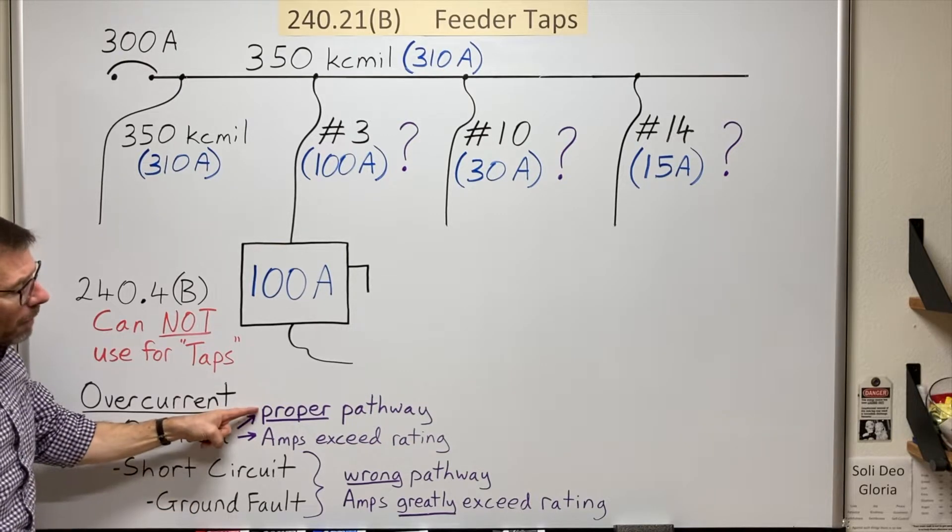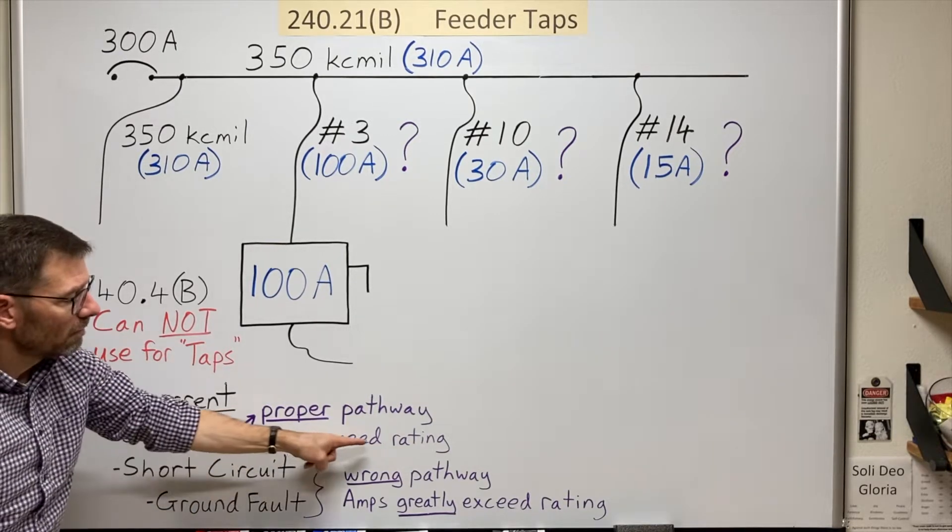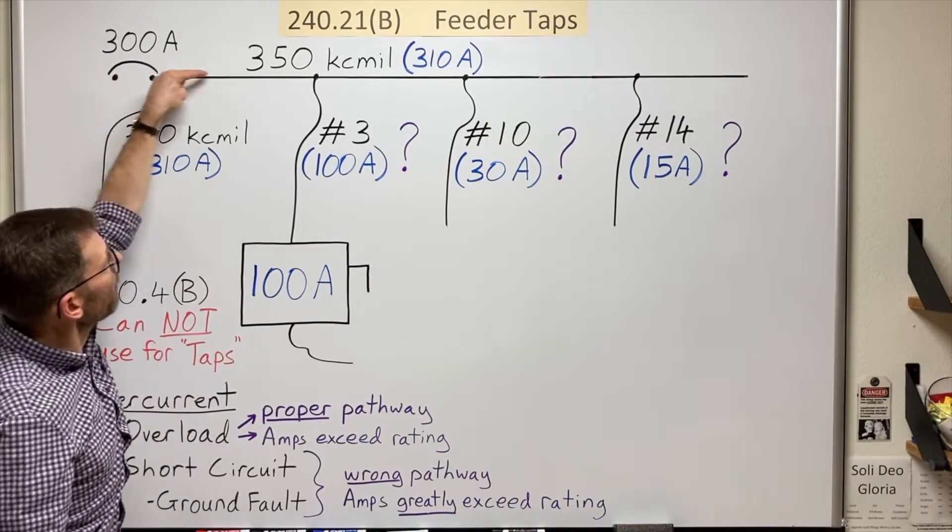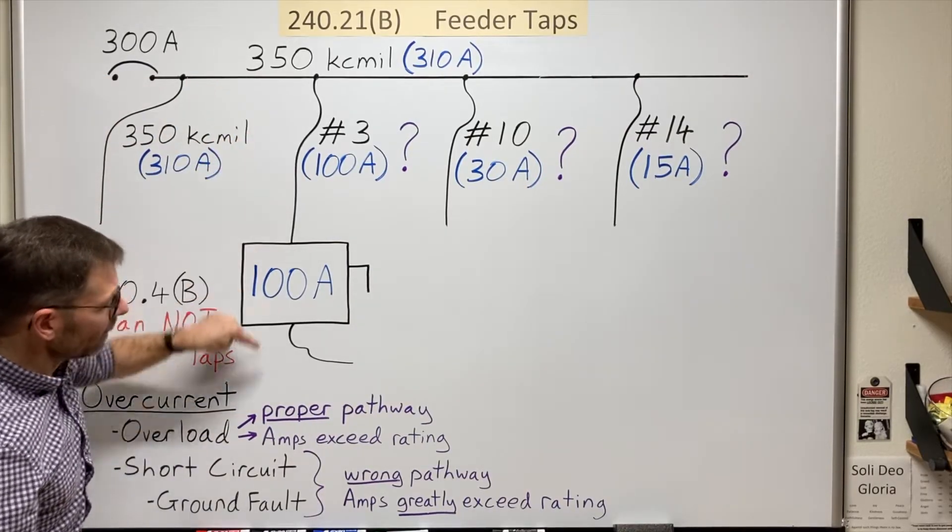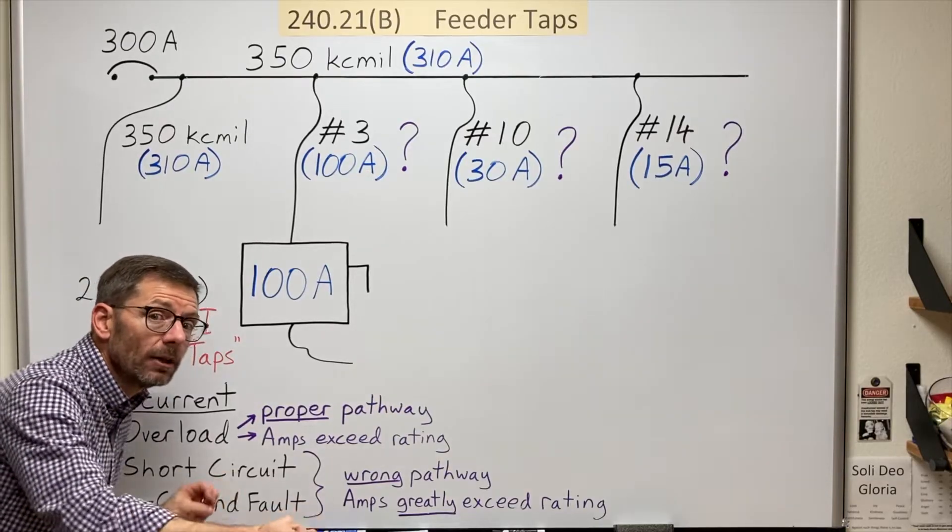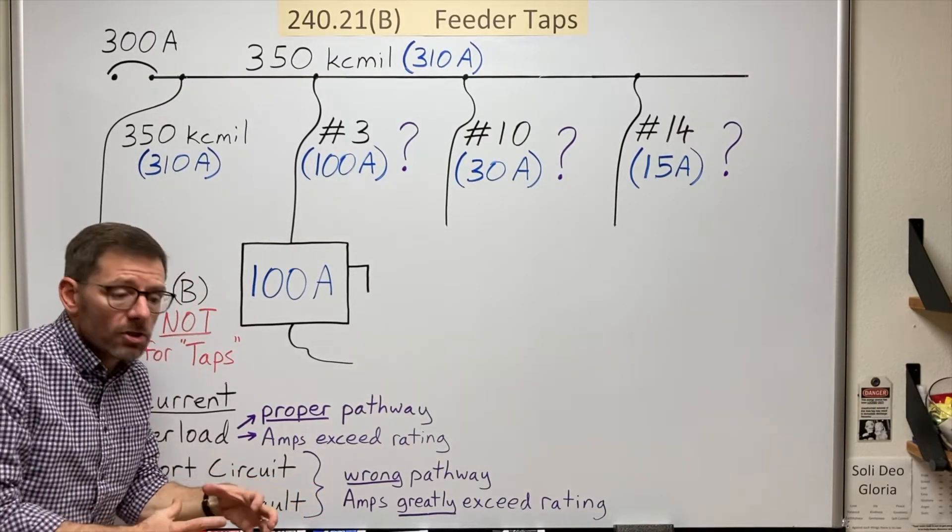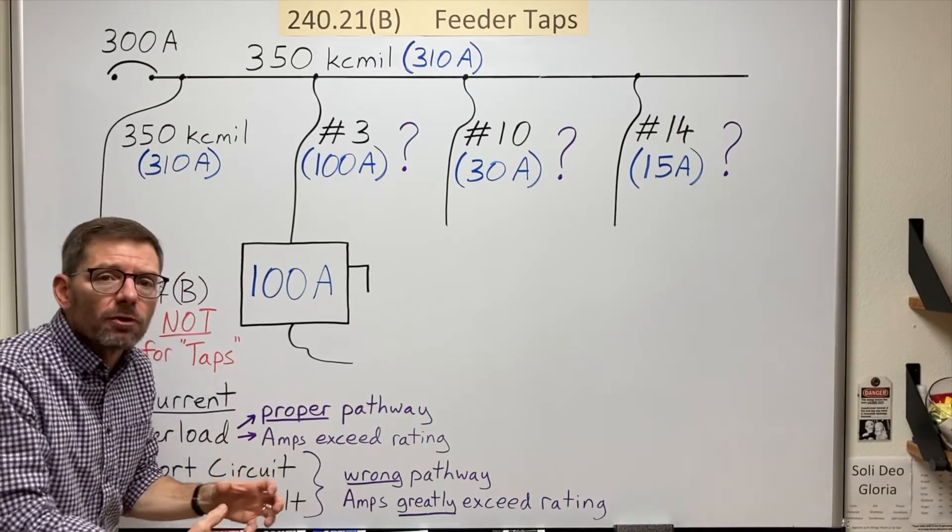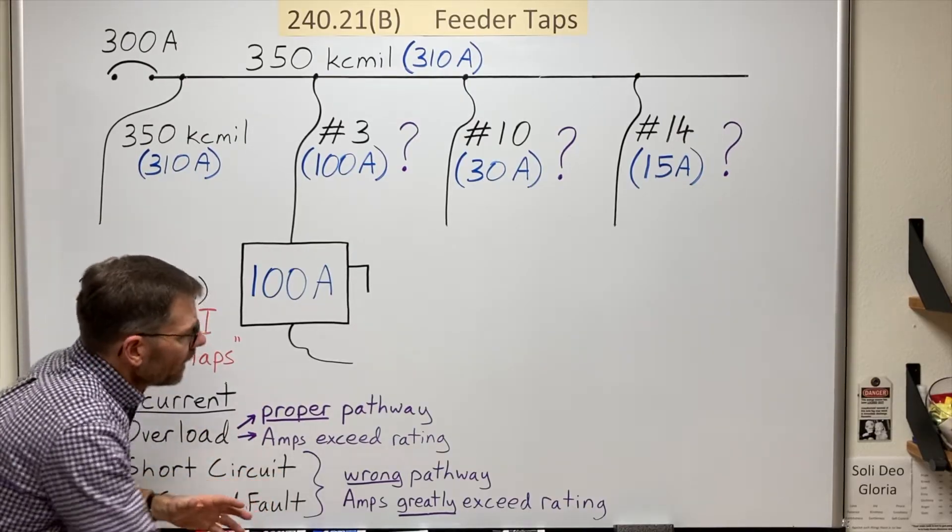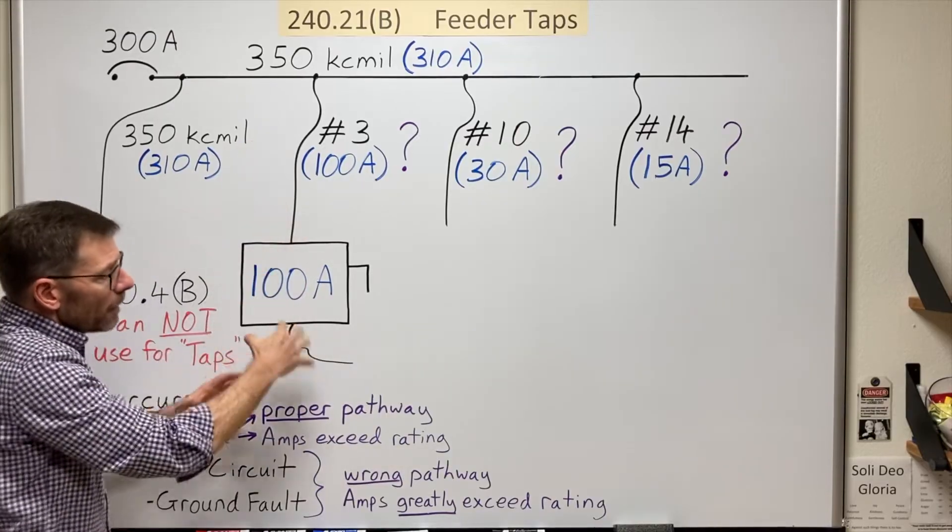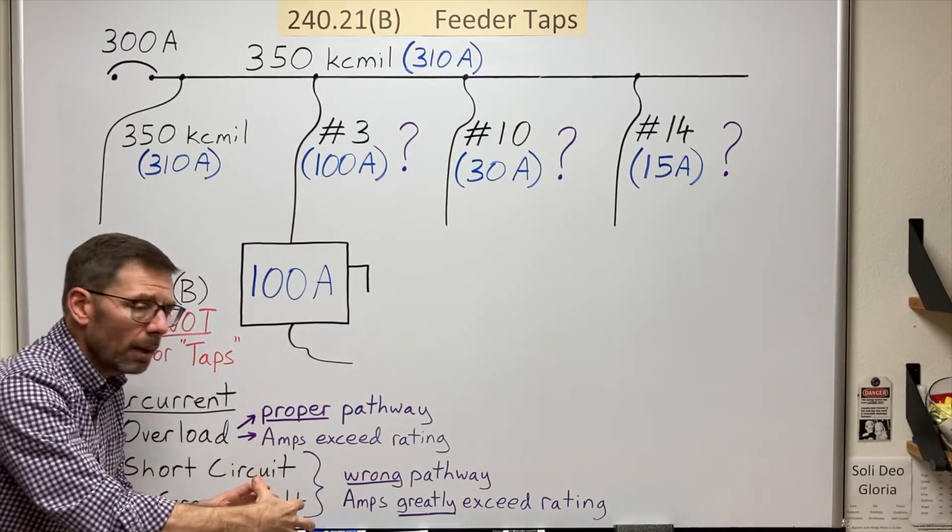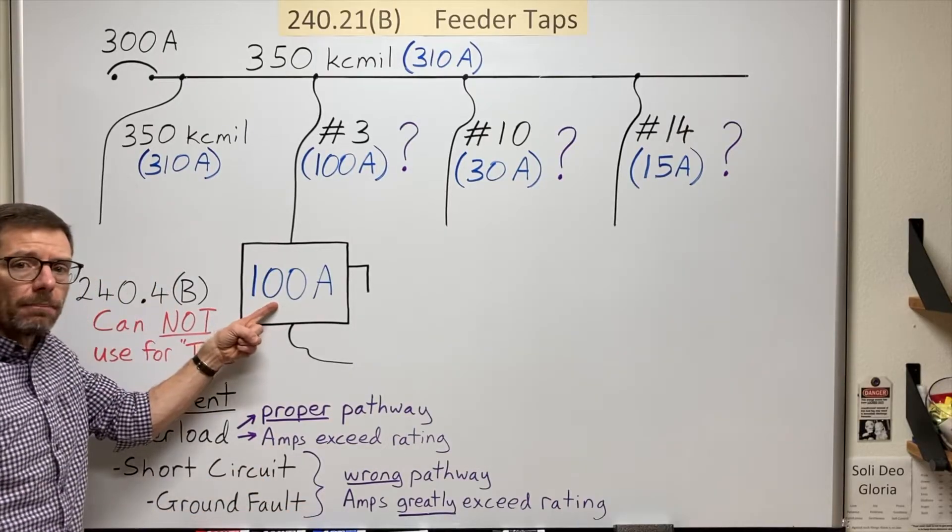Overload says it's flowing in the proper pathway. It's just an excess of amperage. So if it's flowing in the proper pathway, it's going to come down here through the load. And I either have too many loads connected or I have a certain load that is laboring somehow. It's drawing more current for some reason. And then it goes back this way. But if it's going in the proper pathway and it's too many loads or the load is causing the problem, will this device trip? Yes.